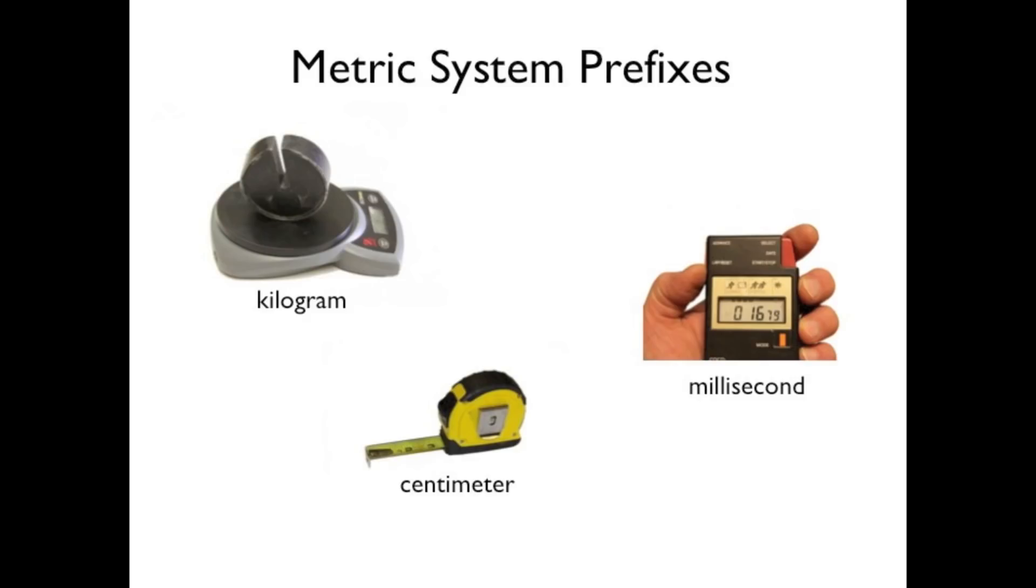Metric System Prefixes. The metric system uses many standard prefixes that associate various powers of 10 with a standard unit. Examples include kilograms, centimeters, or milliseconds.